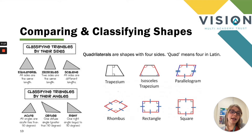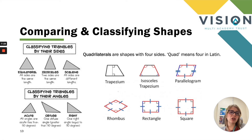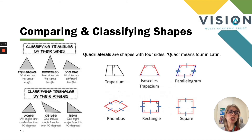We also need to compare and classify quadrilaterals. A quadrilateral is simply a shape with four sides — 'quad' meaning four in Latin. Thinking of a quad bike helps children remember the four in quadrilateral. There are six common quadrilaterals: the trapezium, an isosceles trapezium where two sides are the same length, a parallelogram, a rhombus, a rectangle and a square. On these quadrilaterals you can see marked angles and parallel lines.